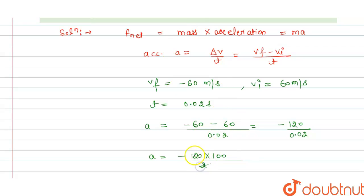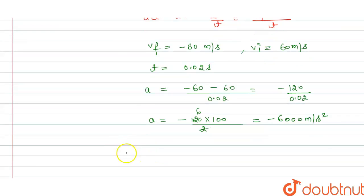We get acceleration is minus 6000 meter per second square, as we have the final velocity in the negative direction opposite to the positive x axis.